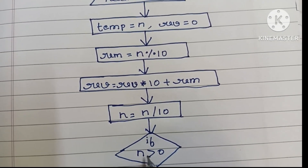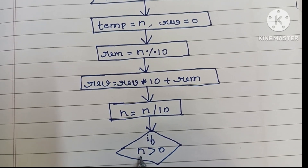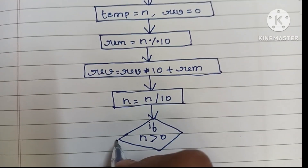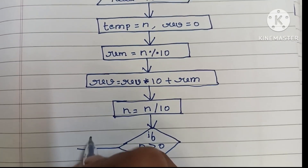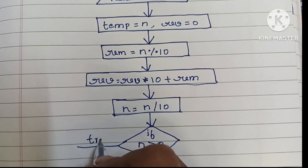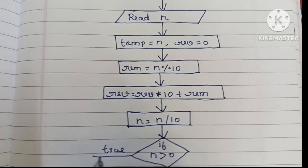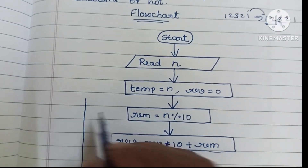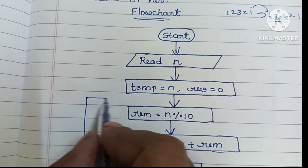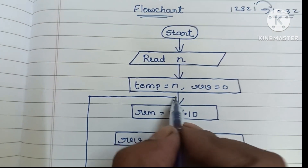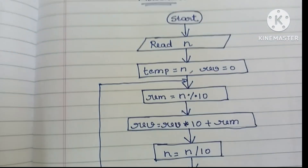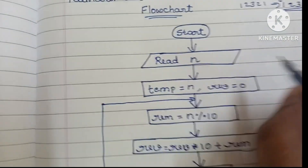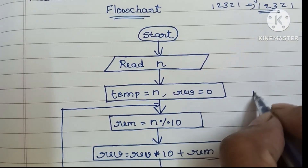Next we check if n is greater than 0. Comparison is always done within a diamond shape. If this condition is true, we repeat the calculation process again.